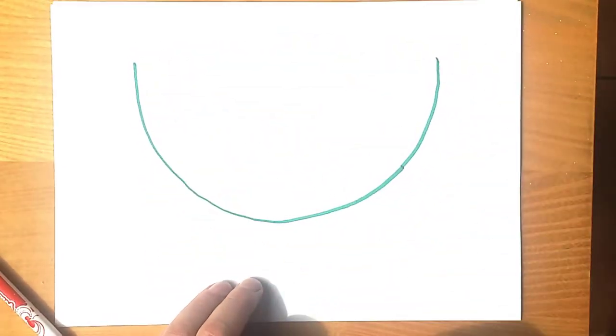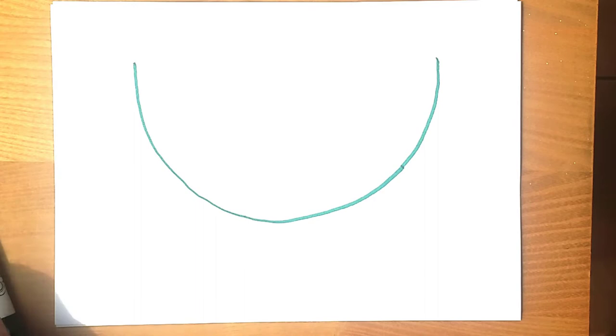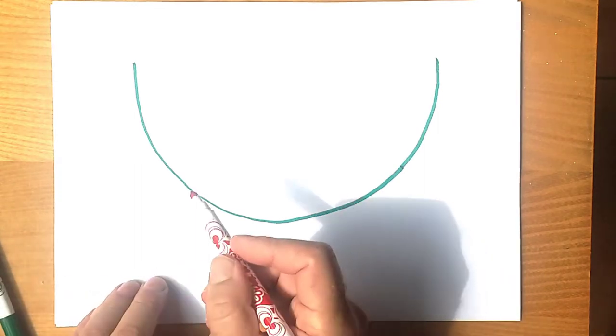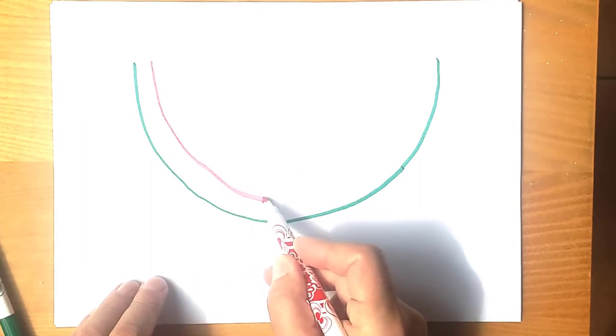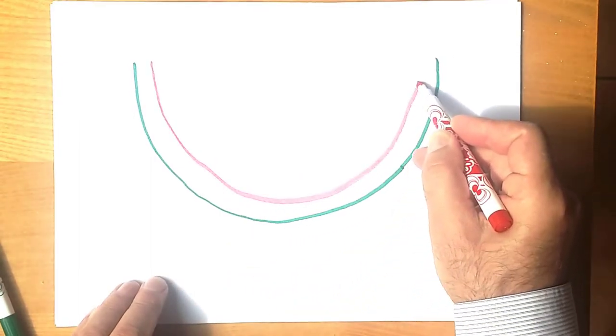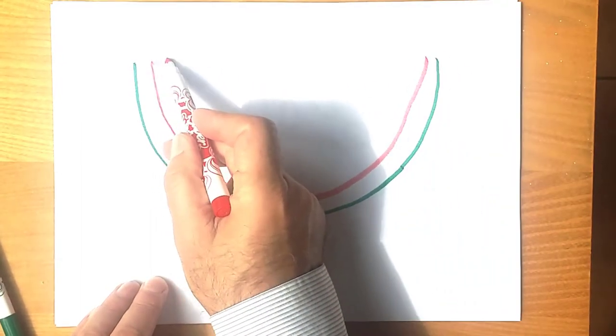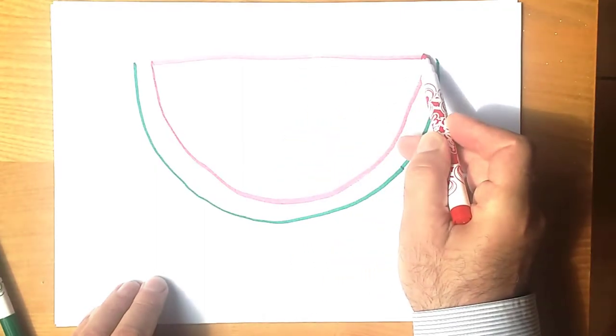First draw a semicircle. This will be our slice of watermelon. Now let's draw two more such semicircular lines.